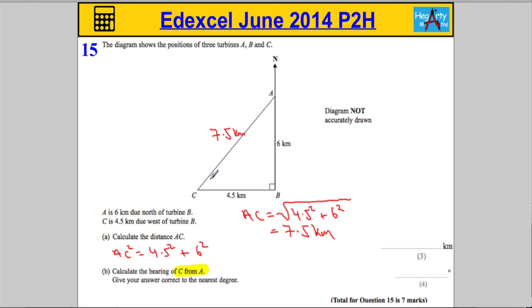OK, so I want to go from A to C, which is here. And we always measure bearings clockwise from the north line. So, in other words, it's asking me for this angle here. OK, so we need to work out this angle here.